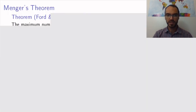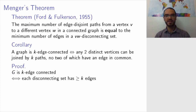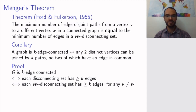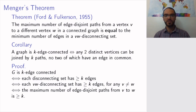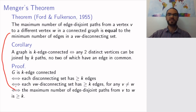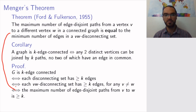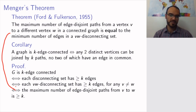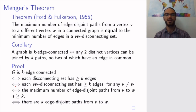Why does this corollary follow? A graph being k edge connected means precisely that each disconnecting set has at least k edges, which means each VW disconnecting set has at least k edges for any choice of distinct V and W. By the theorem, this is equivalent to the maximum number of edge disjoint paths from V to W being at least k. So if the maximum is at least k, there are k edge disjoint paths as required.